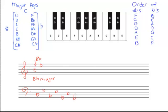Here we have a key signature with seven flats. We're being asked to name the major key. We take the second last flat — in this case it is a C flat — and that is the name of our major key: C flat major.